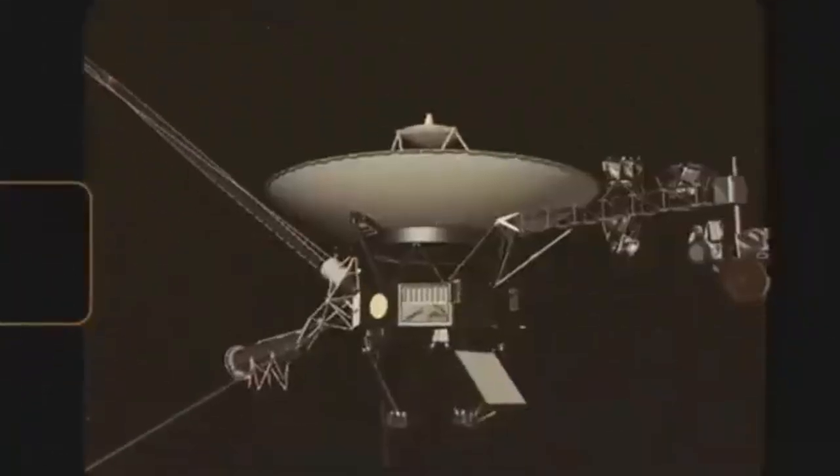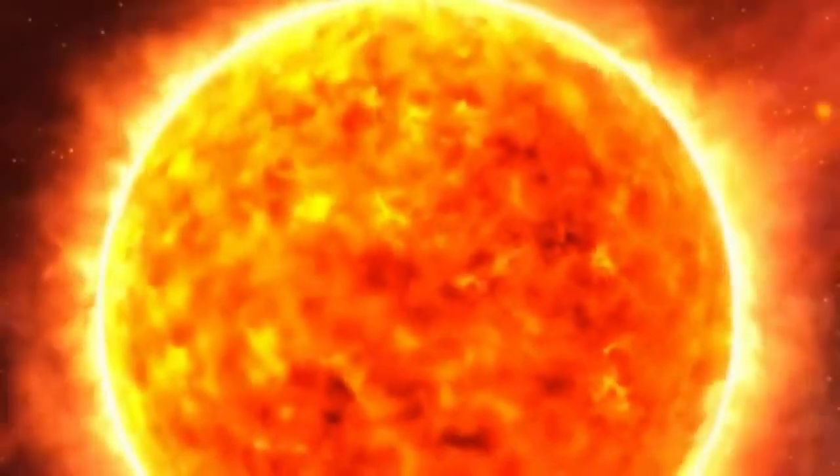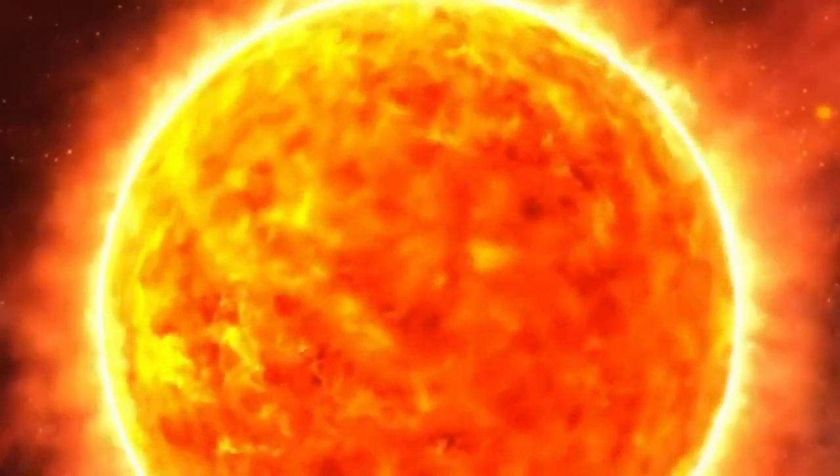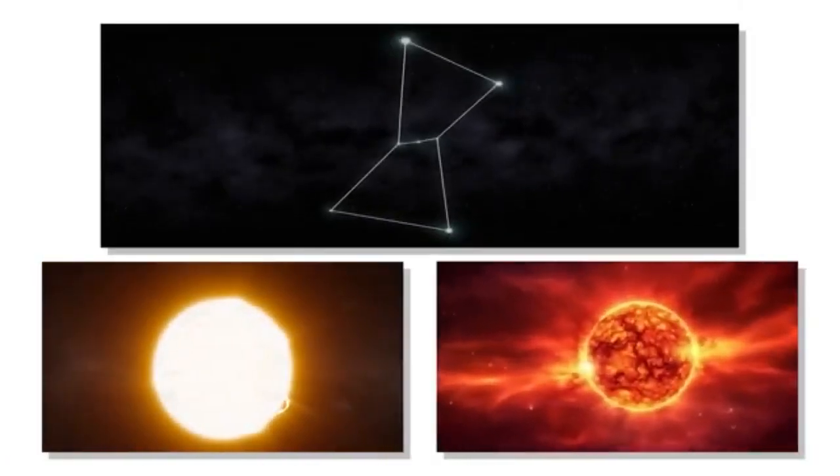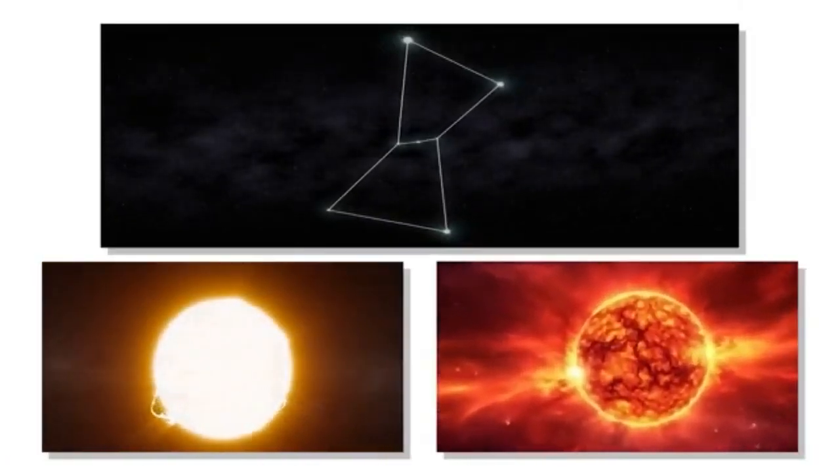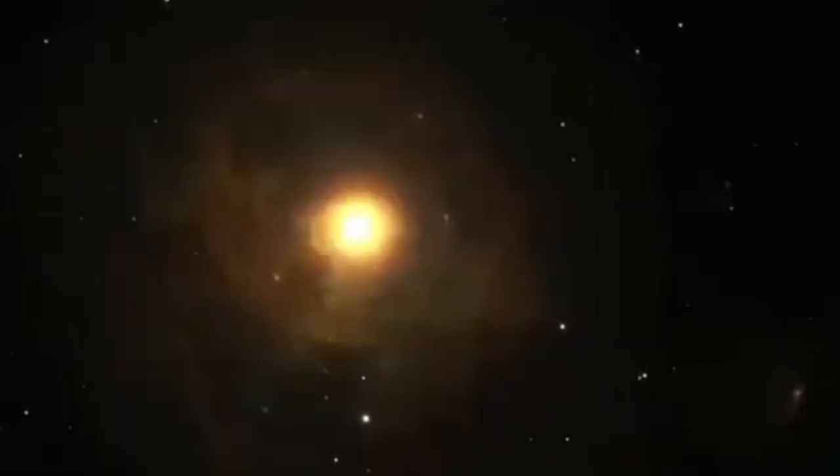But there's still so much more to uncover about this enigmatic star. Betelgeuse isn't just any old star. It's a behemoth in the cosmic arena, classified as an M1-2 Iab-Ib red supergiant. Its designation reveals a lot about its nature. The M signifies its red color and relatively cool temperature. While Iab denotes its intermediate luminosity, placing it between a typical supergiant and a luminous one.